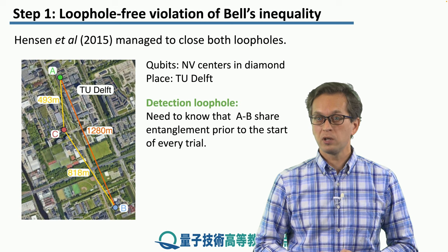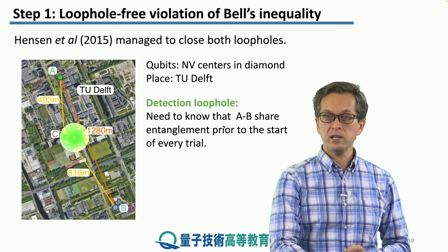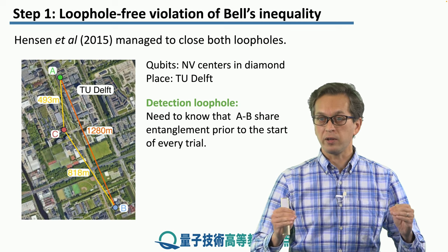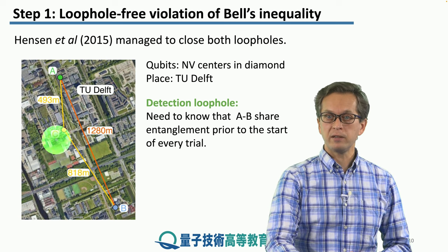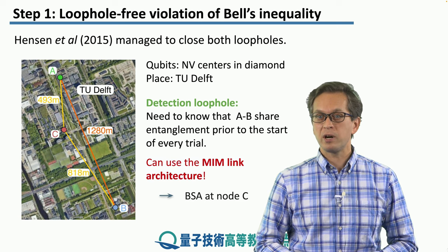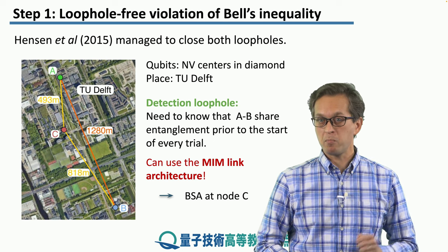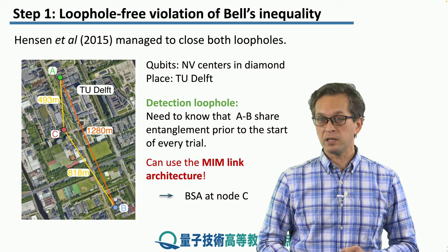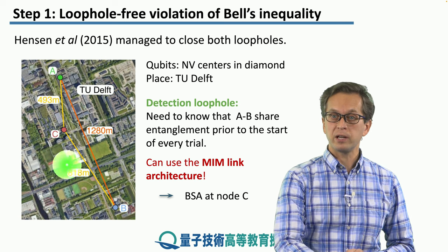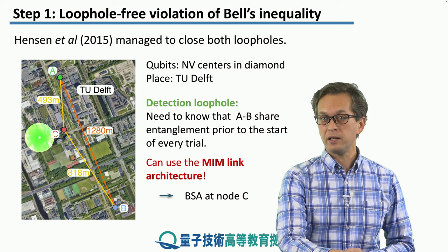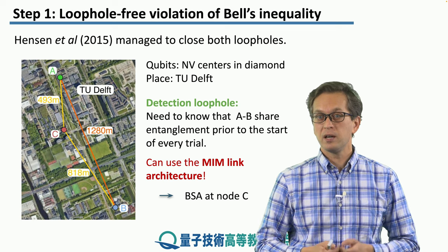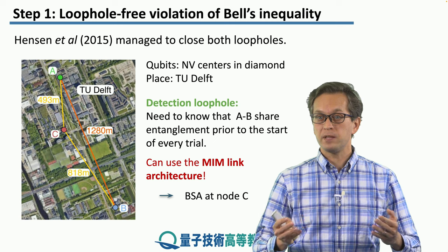The detection loophole was closed in the following way. They used an intermediate node C to herald that A and B were sharing entanglement, so they knew they were able to start a trial on an entangled state. This scenario should sound familiar from our link architectures — this is an MIM link, memory-interference-memory, or mid-in-the-middle link architecture. The qubit at A emitted a photon, and so did the qubit at B. Those photons were collected into fibers shown by the orange/yellow lines, and they met and interfered at a BSA at node C. This BSA performed a Bell basis measurement, and if successful, the signal was sent to A and B. This way the detection loophole was closed.